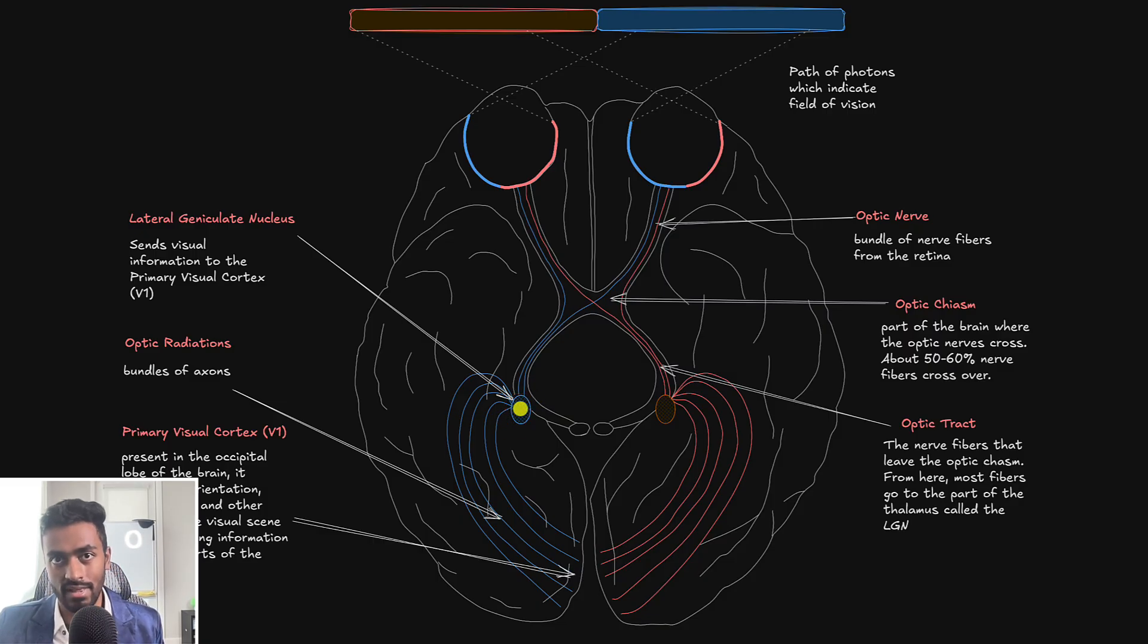These are then going to be relayed through these bundle of axons to the primary visual cortex located in the occipital lobe of the brain and the cells in the primary visual cortex can understand orientation, edges, color among other parts of a visual scene and this is then passed into the further parts of the brain like V2 for further processing.